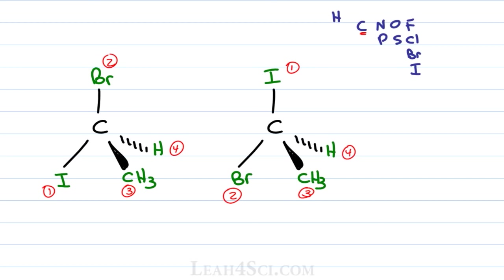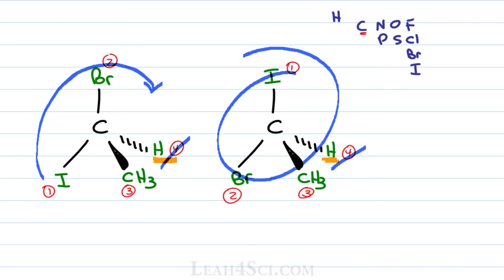That'll be number one, number two, iodine is number one, bromine is number two. Step one, rank your substituent, good. Step two, ensure that number four is in the back. I set this up as a simple example with hydrogen as number four in the back. Step three, you want to cross out number four because we put it in the back so we don't have to think about it and step four, we're going to trace an arc from one to two to three. An arc from one to two to three.